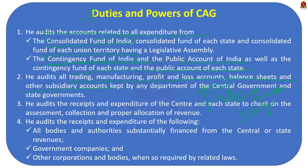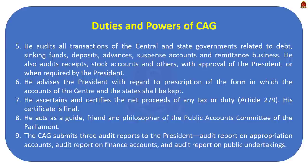One important function to remember is that the CAG submits three audit reports to the president: one is the audit report on the appropriation accounts, the second is the audit report on finance accounts, and the last one is the audit report on public undertakings. These static topics are very much important for your preliminary examination because straightforward questions are asked from these topics.